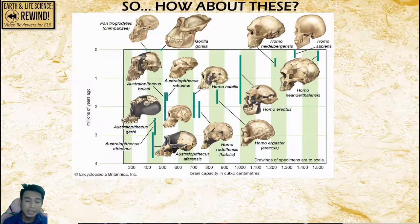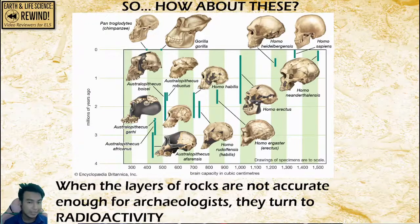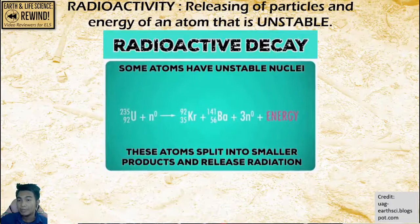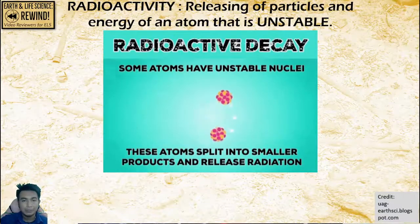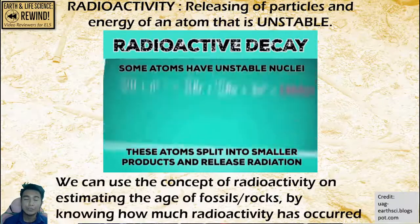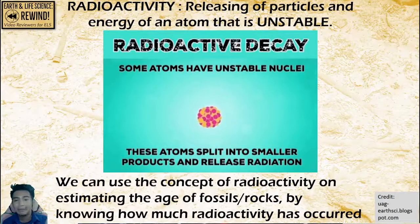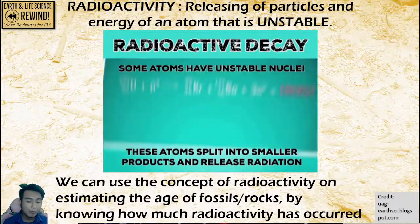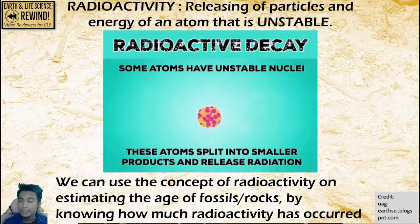When the layers of rocks are not accurate enough for archaeologists, they turn to radioactivity. Radioactivity is the releasing of particles and energy from an unstable atom. We can use this concept of radioactivity because radioactive elements have their own specific time at which they release their particles and energy. By knowing how much radioactivity has been released, we can have clues on how old the rocks are.